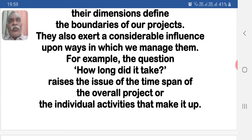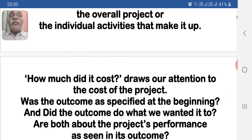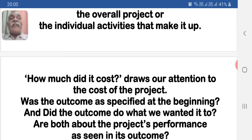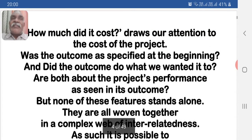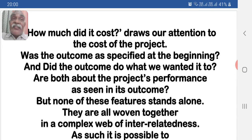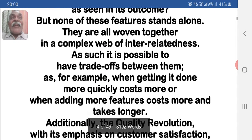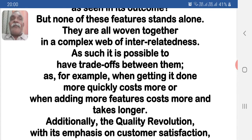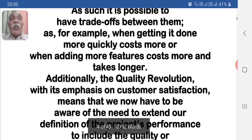For example, the question 'How long did it take?' raises the issue of the time span of the overall project or the individual activity that makes it up. 'How much did it cost?' draws our attention to the cost of the project. 'Was the outcome as specified at the beginning?' and 'Did the outcome do what we wanted when we wanted it to?' are both about the project's performance as seen in its outcome. But none of these features stands alone — they are all woven together in a complex web of interrelatedness. As such, it is possible to have trade-offs between them, for example, when getting it done more quickly costs more.